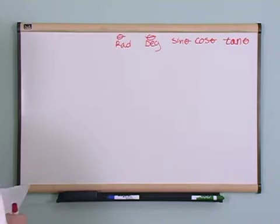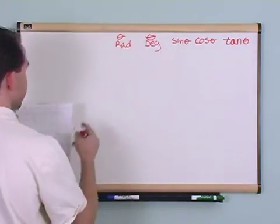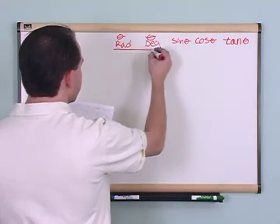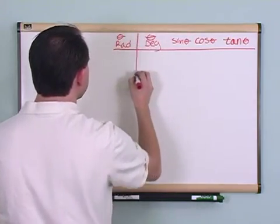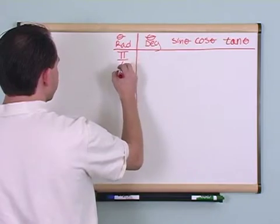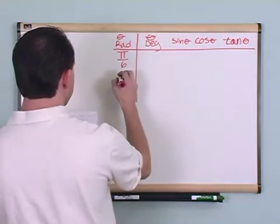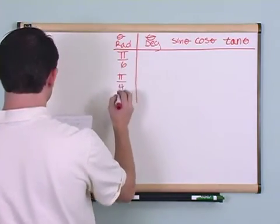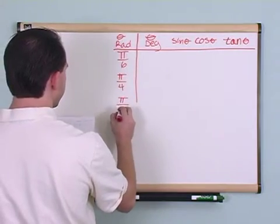And then what we will have is, and again, I'm going to explain why I'm doing this first. These are the important angles for you to remember: Pi over 6, pi over 4, pi over 3.